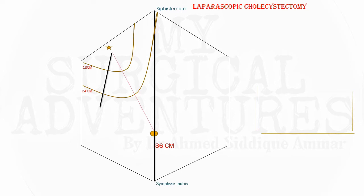Now considering lateral spacing: the distance between each working port and the telescope's midline should be about 7.5 centimeters. The total distance between the two working ports should therefore be 15 centimeters. When both ports are placed 15 centimeters apart, the angle formed between them is 60 degrees. This 60-degree angle is known as the manipulation angle and is critical to prevent instrument collision.